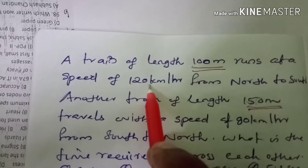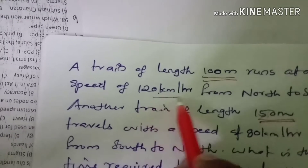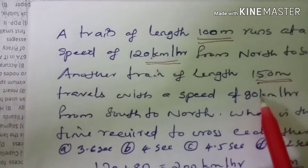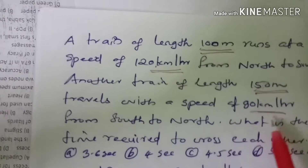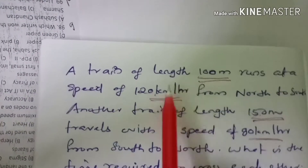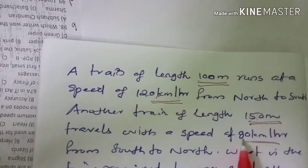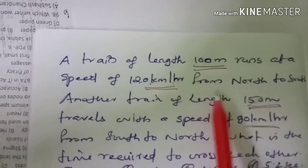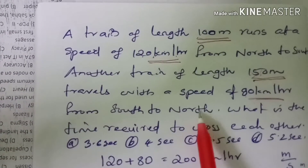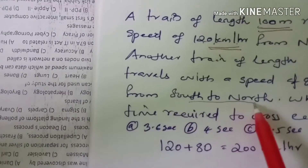We have speed at 80 km per hour. In this case we will take two trains — one going north to south and the other south to north. These trains are travelling in opposite directions.